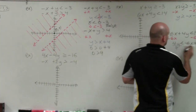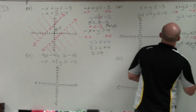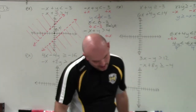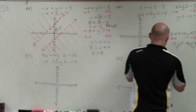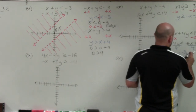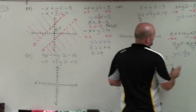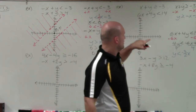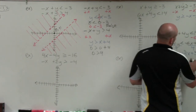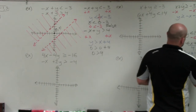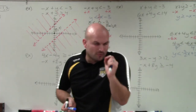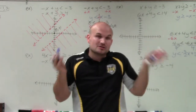Dividing by 4, I obtain y is less than negative 3 halves x plus 7 halves. Note that 7 halves is 3.5. Now remember, we're not just looking for where the lines intersect — we're looking for where their solution sets intersect.